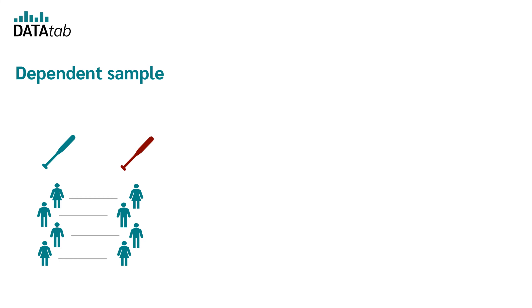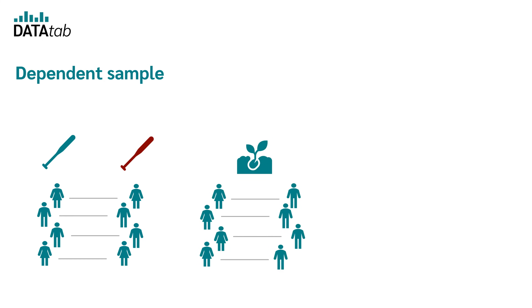Another example would be if you want to find out whether in a couple, women do more gardening than men, and you would also have dependent samples. In this case, there would be two measures at a time, but always in pairs — always one woman and one man.